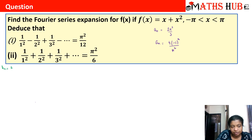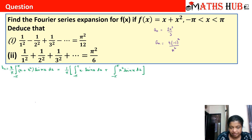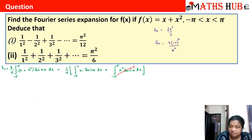The coefficient bₙ is 1/π times the integral from minus pi to pi of (x + x²)·sin(nx) dx. Separating this into two integrals: the integral of x·sin(nx) dx and the integral of x²·sin(nx) dx. The first: x is odd and sin(nx) is odd, so their product is even — this will give a result. The second: x² is even and sin(nx) is odd, so the product is odd — this integral becomes 0.